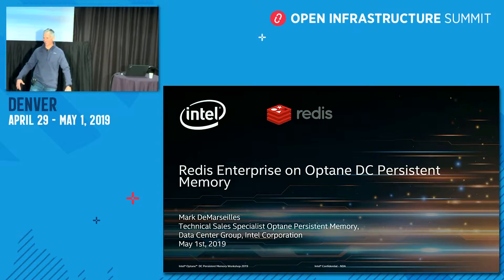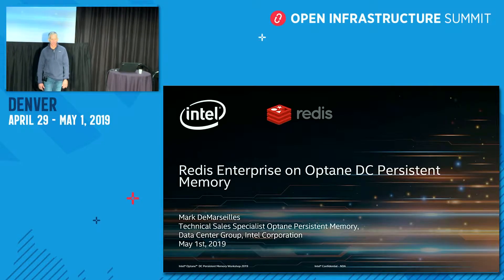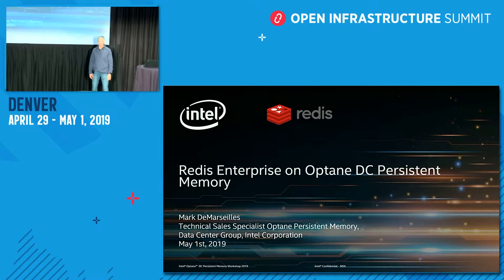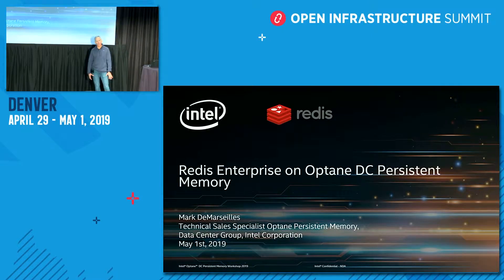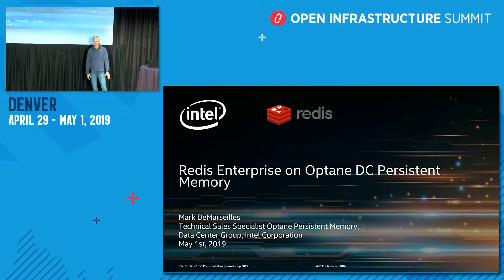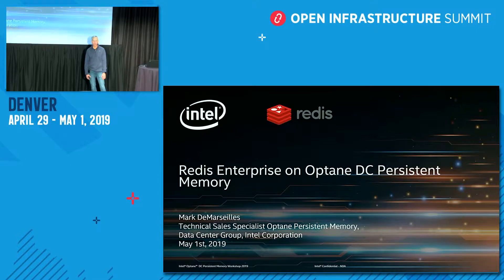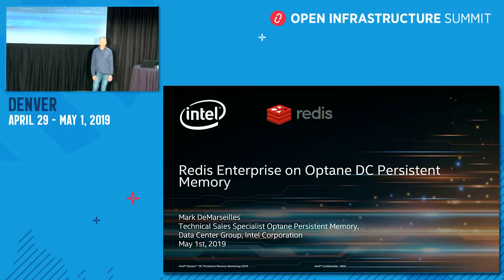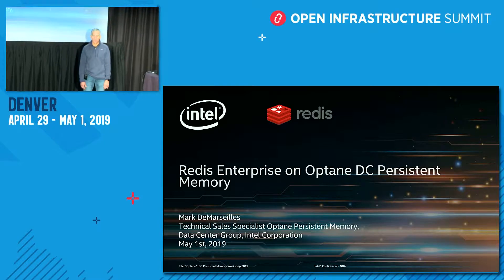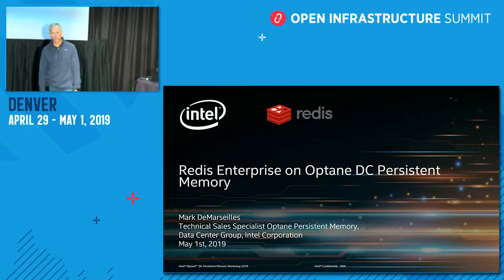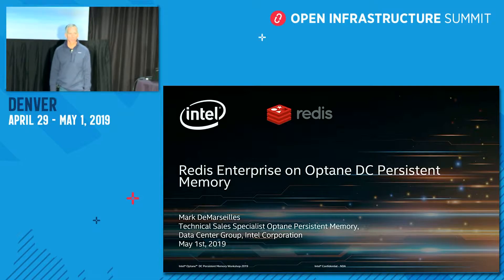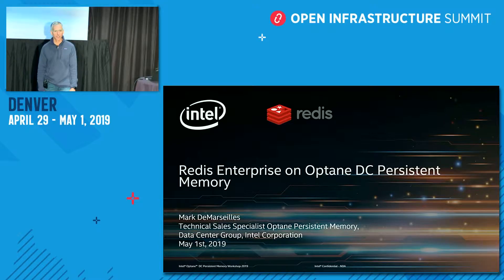Good morning, and thanks for stopping by our booth today. I'm Marc DeMarsay with Intel. I'm part of a group — I like to think of myself as an evangelist of technology. I have the pleasure of presenting to you today on the recently announced Intel Optane DC Persistent Memory, and we've done a lot of work with partners like Redis. I'd like to talk about that work and show a value prop for how you can benefit from this technology.